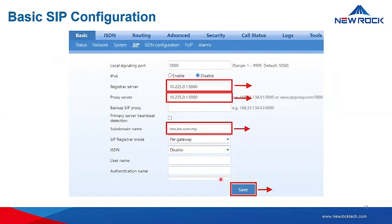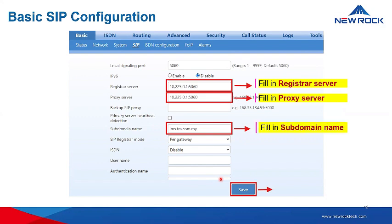For the basic SIP configuration, you can fill in the register server, the proxy server, and the subdomain name, then click save. With the register mode, you can select per gateway to authenticate and register per gateway, or select per SIP trunk, which is usually provided by the IMS platform.